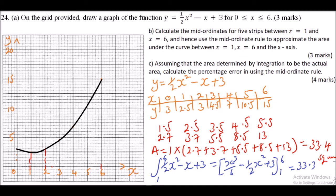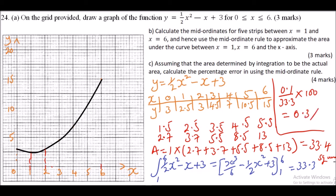Percentage error = (|33.4 - 33.2| / 33.2) × 100 = (0.1 / 33.2) × 100 ≈ 0.3%. I have used shortcuts here because of space, but in an exam paper you have a whole page to show all your working. That is how you generally work out this question.